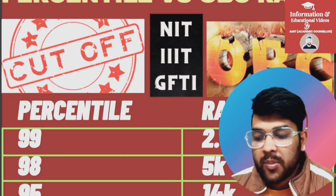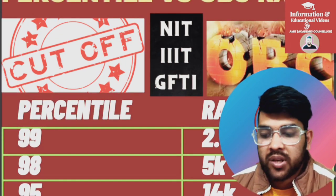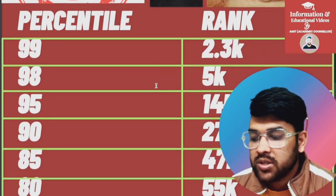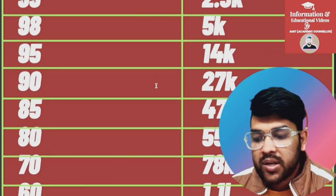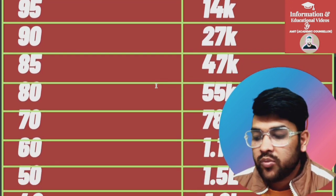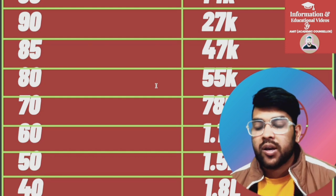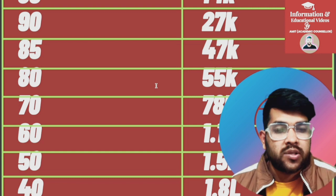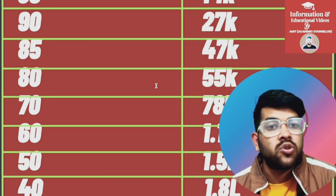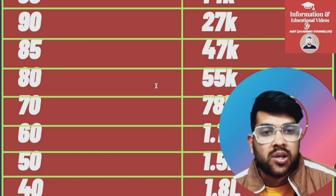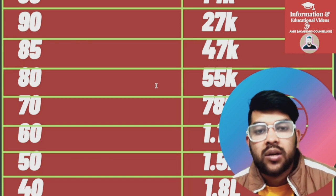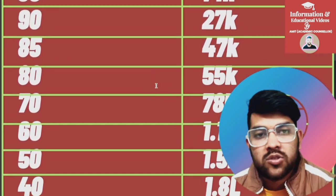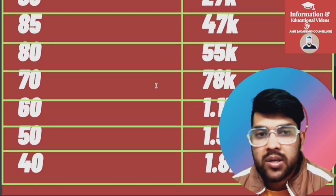For 95 percentile, your OBC rank will be 14,000. For 90 it is 27,000. For 85 it is 47,000. For 80 it is 55,000. For 70 it is 78,000. For 60 it is 1.1 lakh, and for 50 it is 1.5 lakh. For 40 it is 1.8 lakh. I have included up to 40 percentile because in counseling other than JoSAA and CSAB, you can get a college even at 50 or 60 percentile based on OBC category.